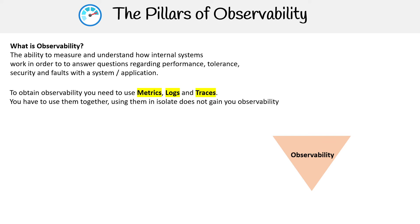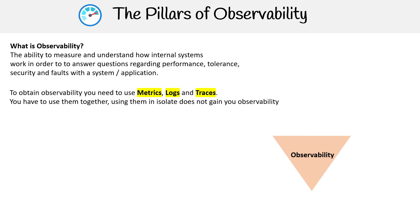And in order to obtain observability, you need three things: you need metrics, logs, and traces. And you have to use them together — using them in isolation does not gain you observability. So let's go define those three things.